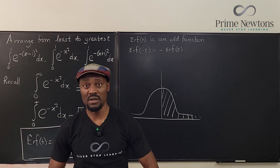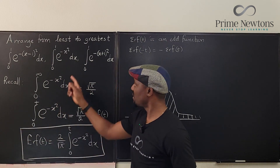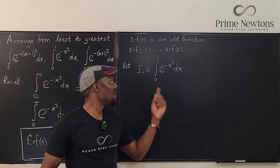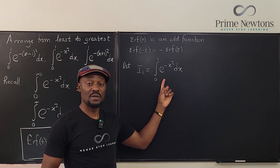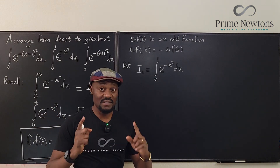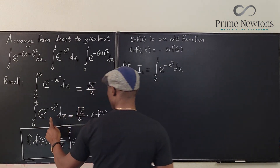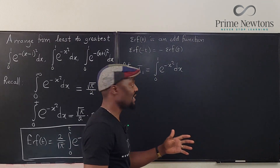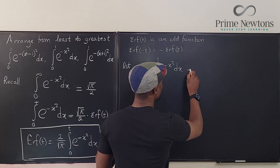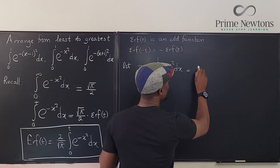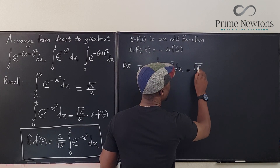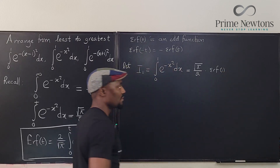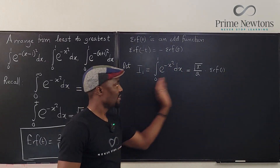Now let's solve each of these integrals and see which is smallest and which is biggest. Because the middle one is closest to what we've been working with, I'll start there. Let I1 be equal to the middle integral. Based on what I explained, because this does not go all the way to infinity, I know that this is equal to square root of pi over two times the error function of one. That's it — we're done with I1.